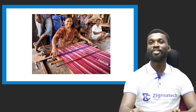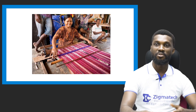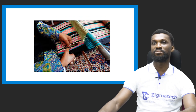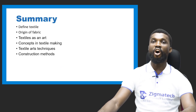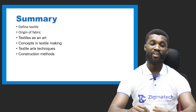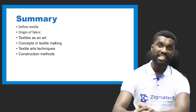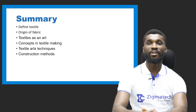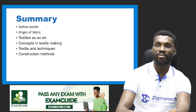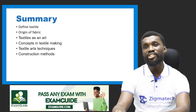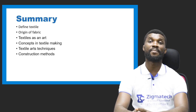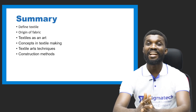This image shows a lady creating a beautiful piece — it could be Indian material or anything — and that is the construction technique of making textile. These are different beautiful construction techniques of making textile. In summary, we defined textile, talked about the formation of yarn into fabric, covered the origin of textile, discussed textile as an art, the concepts in textile making, textile art techniques, and the construction method of making textile.